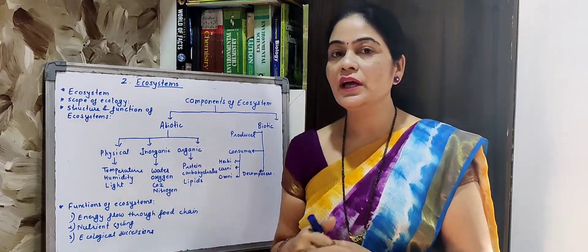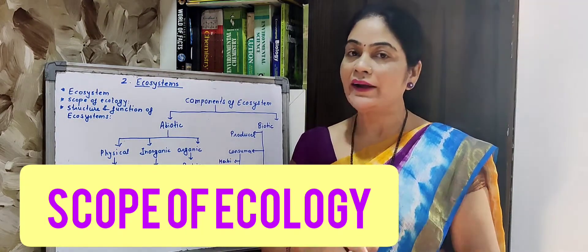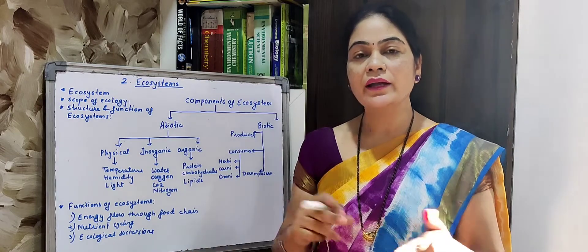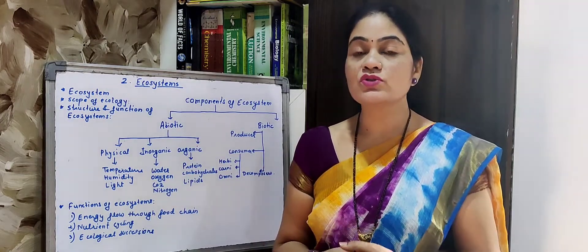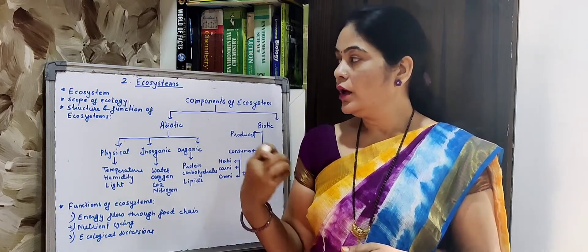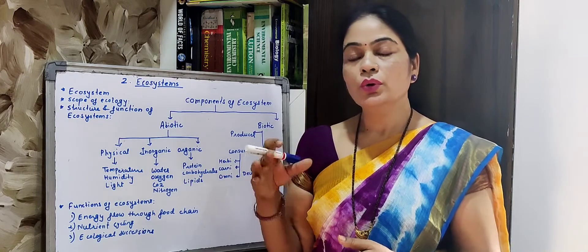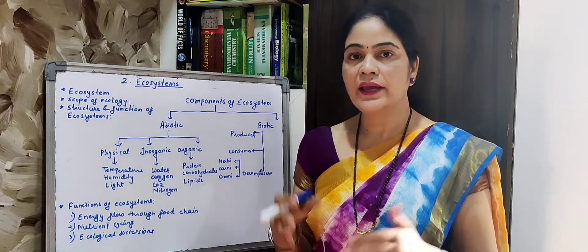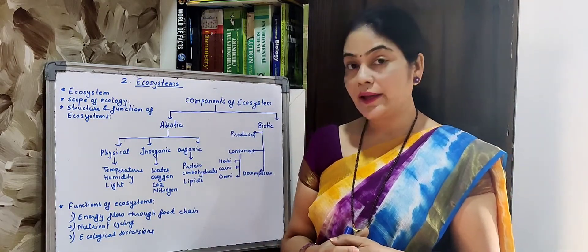Basically, ecosystem is related with ecology. Ecology is the study of the relation between biotic and abiotic components. Here biotic means all living components, and abiotic means non-living components. When we study the relation between biotic and abiotic components, that is ecology. Because there is no possibility to study animals or organisms without their habitat, without their physical characters, without their abiotic components — just as a human being cannot survive without soil, water, or shelter.